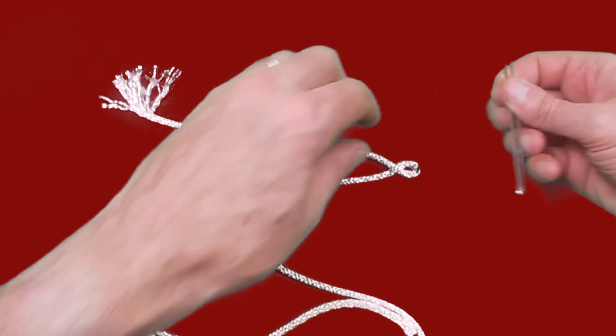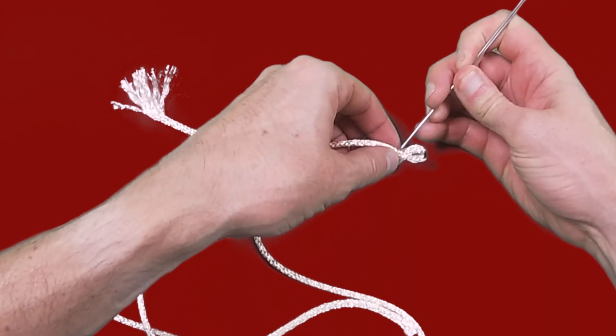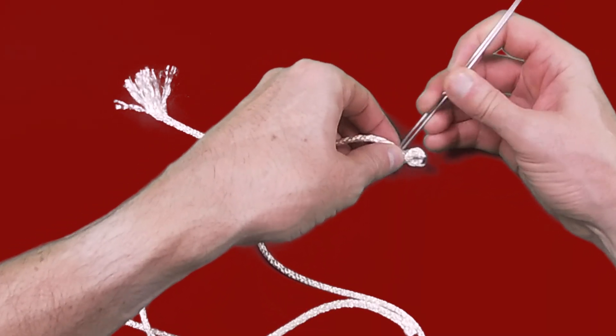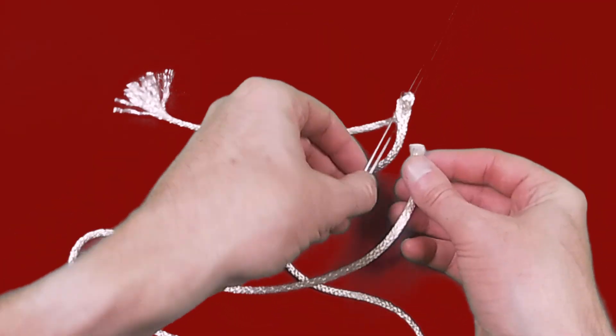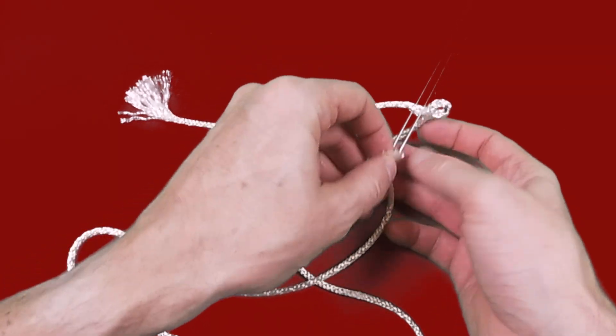Then finish the locking splice by pulling the main line through just below where you've first pulled the tail through the main line.